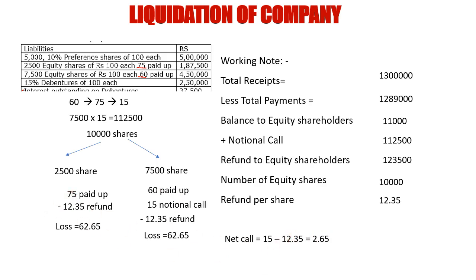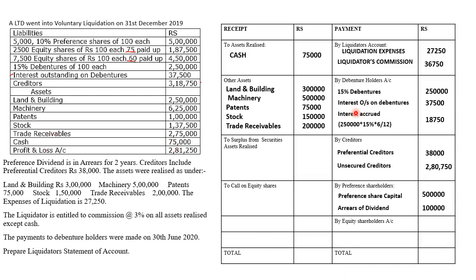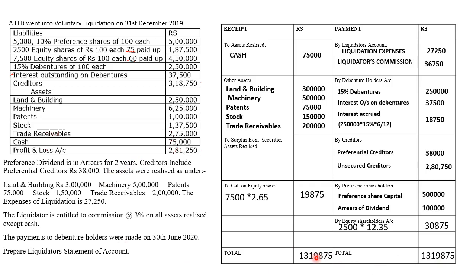Now applying these amounts in the solution: Call on equity shares from the 7,500-share category: 7,500 × 2.65 = 19,875, recorded on the receipt side. On the payment side, for the 2,500-share category: 2,500 × 12.35 = 30,875 refund to equity shareholders. After tallying both sides, the total comes to 13,19,875, which balances on both sides.